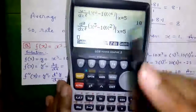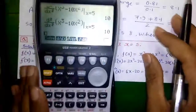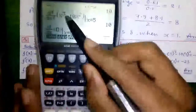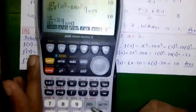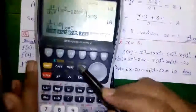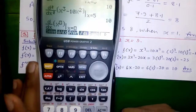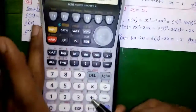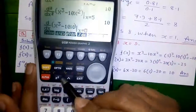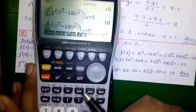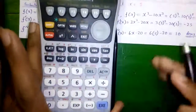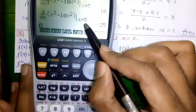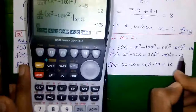Now I will show how to find dy/dx on the same calculator. Press F2 to get the dy/dx operator. Enter the expression again: Alpha plus for x to the power 3, scroll right, minus 10, Alpha plus for x, then the square button. Scroll right, x equals 5, press Execute. So dy/dx at x equals 5 is minus 25, which we calculated earlier.